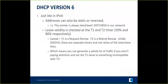In DHCP version 6 you can also have static and reserved addresses, which have to be assigned by the DHCP server, because your link local gateway won't have that information unless it is your DHCP server.